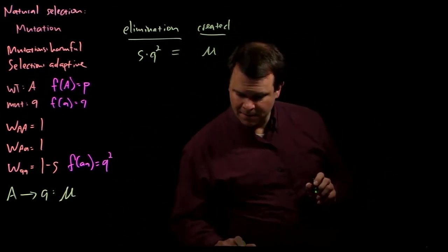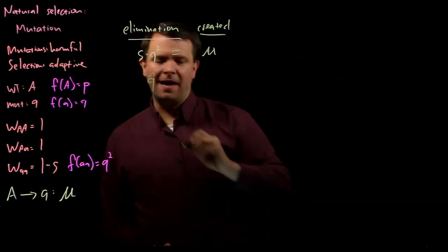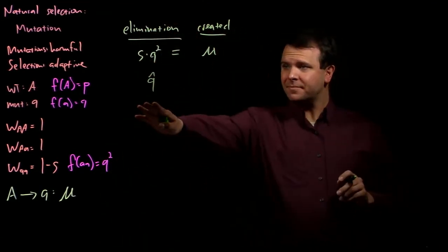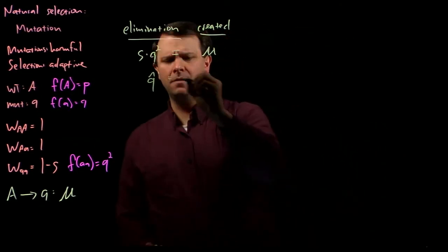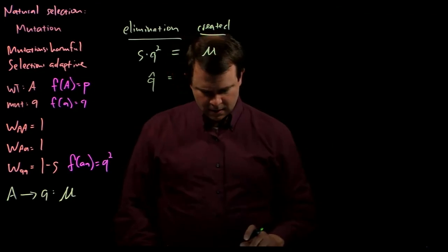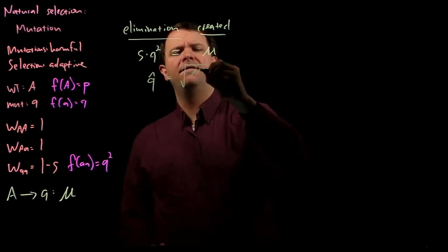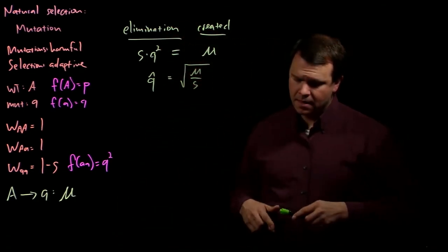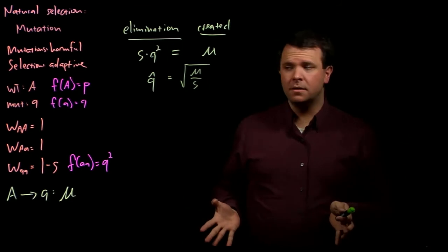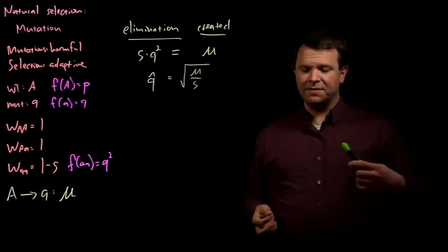We can do a little bit of rearranging, and we find that Q-hat, which is the equilibrium frequency of the mutant allele, is the square root of mu over S. This is all well and good if this little a allele is completely recessive.